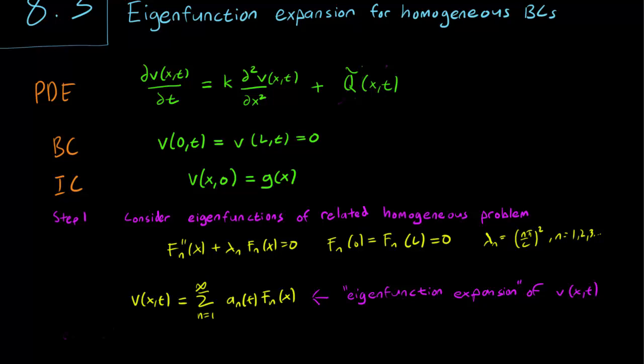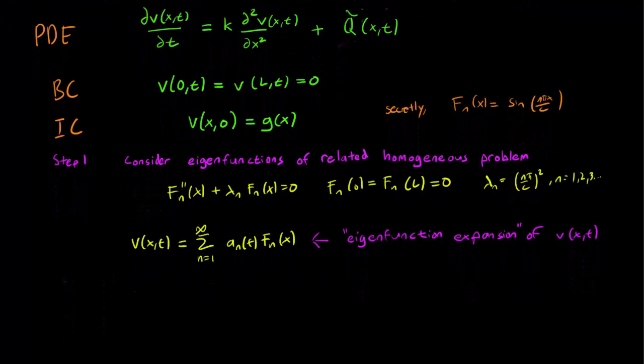By the way, the F_n are actually equal to sine, but I want to still write it down in terms of F_n because I want to emphasize that this technique works whatever your eigenfunctions are, even if it isn't just a trig function. Well keep in mind that for this particular equation, the F_n's are the sine(n*pi*x/L). We can use this technique for any set of eigenfunctions.